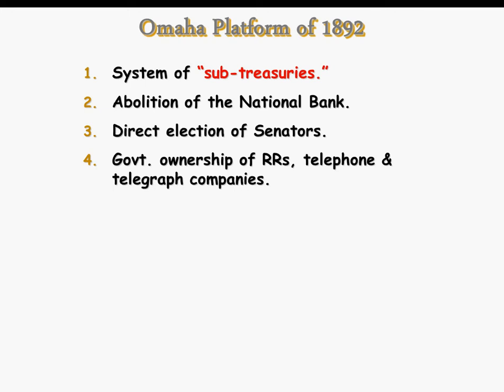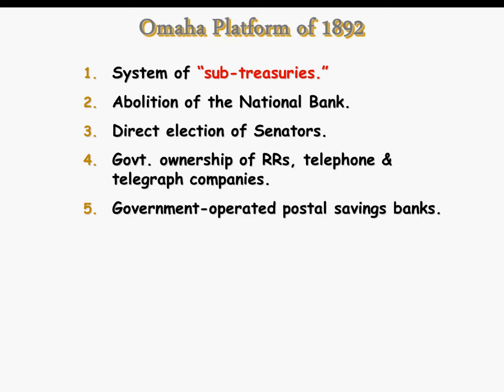The direct election of senators will happen later in the 20th century, so some of their agenda will be fulfilled. Most of it wasn't. Ownership of the railroads, telephones, and telegraph companies never happened. And they wanted the government to operate a postal savings bank to provide low-interest loans to farmers.